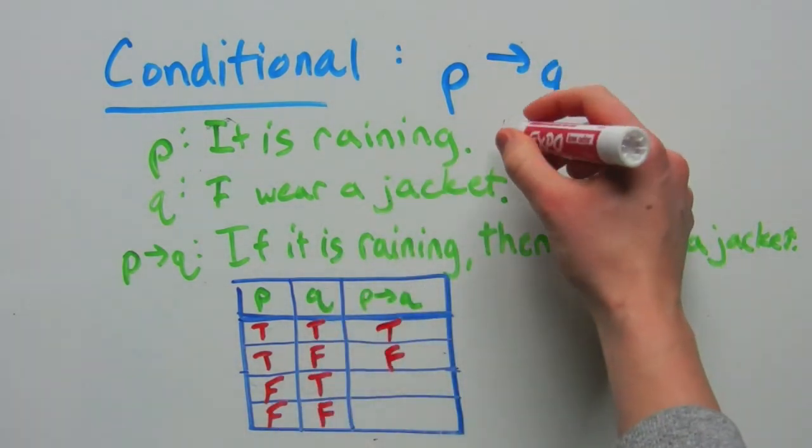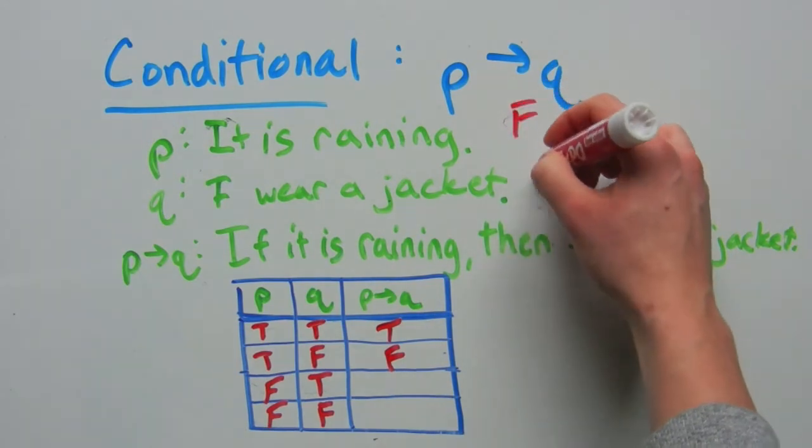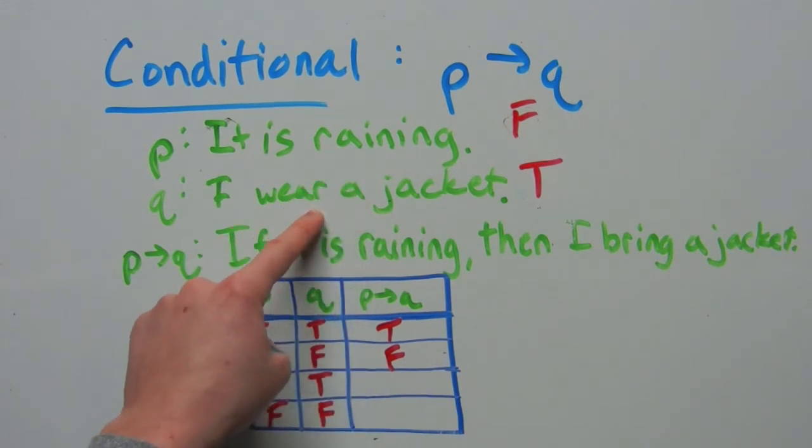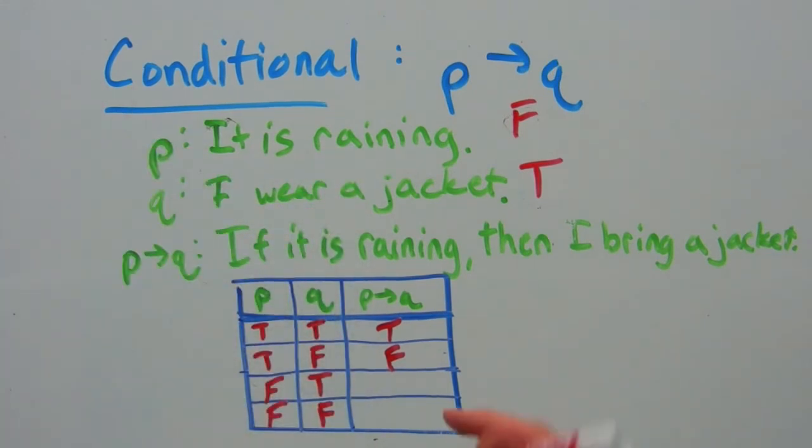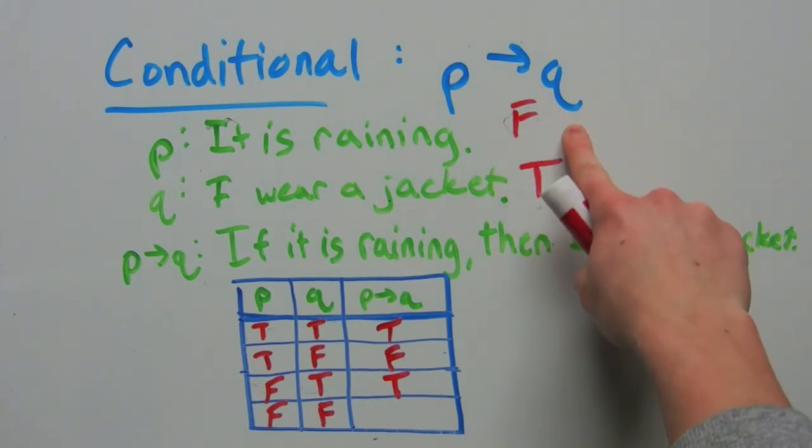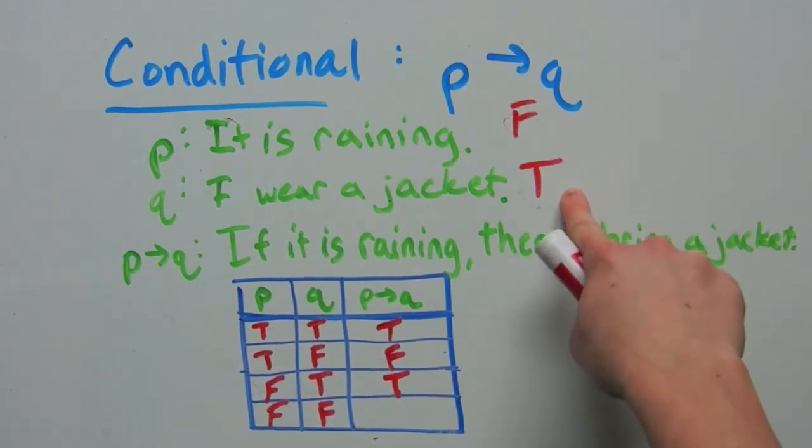So now, we're moving on and saying that this first statement is false and the second statement is true. So if it is not raining, I wear a jacket. That's possible. So that is also true, because you can have a false hypothesis and still get a true conclusion.